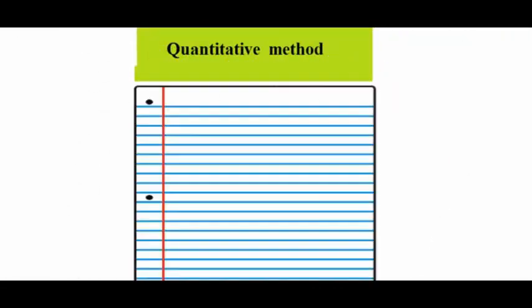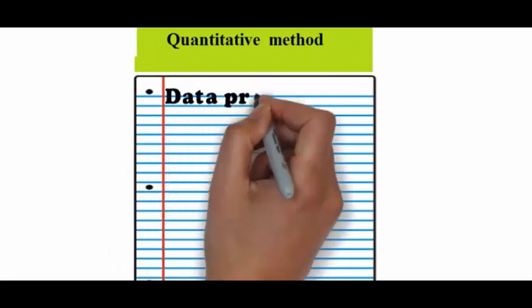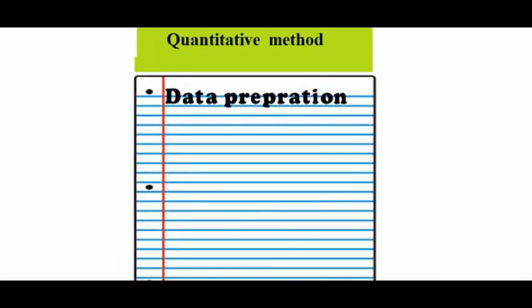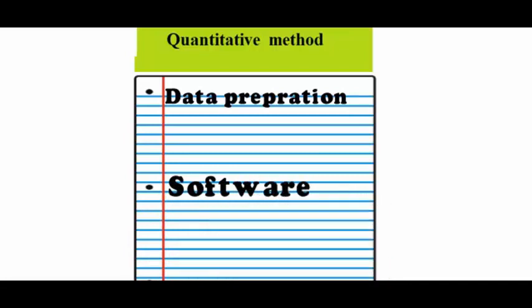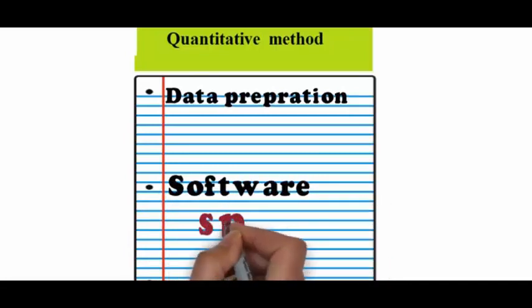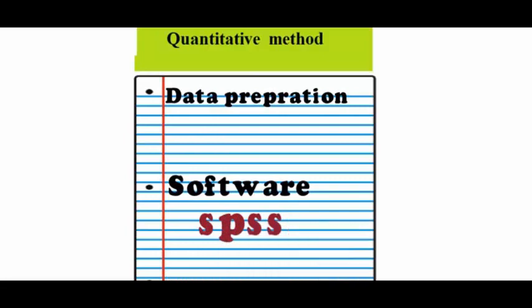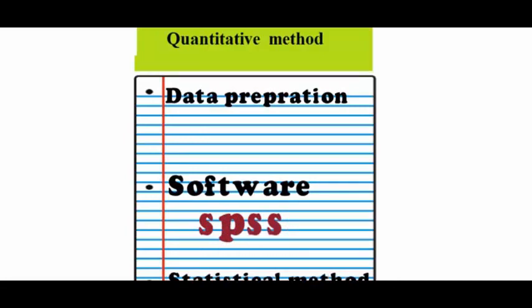Quantitative method: dealing with numbers. One, preparation for analyzing. Two, which tools to use to analyze the data. SPSS is used for analyzing the data. Three, statistical methods you use. T-test was conducted to test.